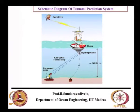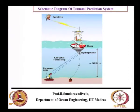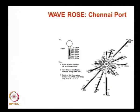This is a tsunami prediction system where we measure water level variation in very deep waters. In 5000-meter water depth, the tsunami height is only about half a meter to 1 meter, so sophisticated equipment is needed to sense this pressure variation. In the next class, we will move on to the wave rose diagram.